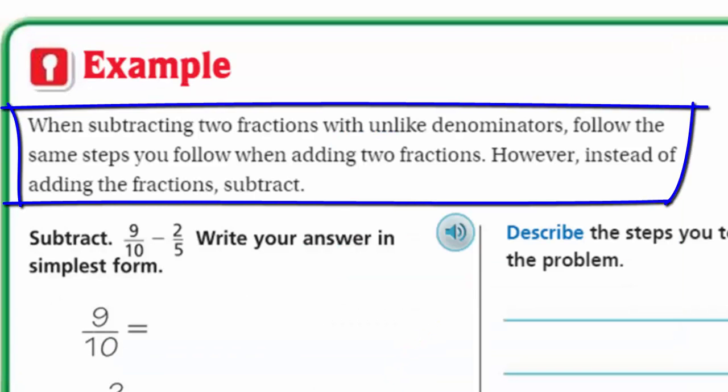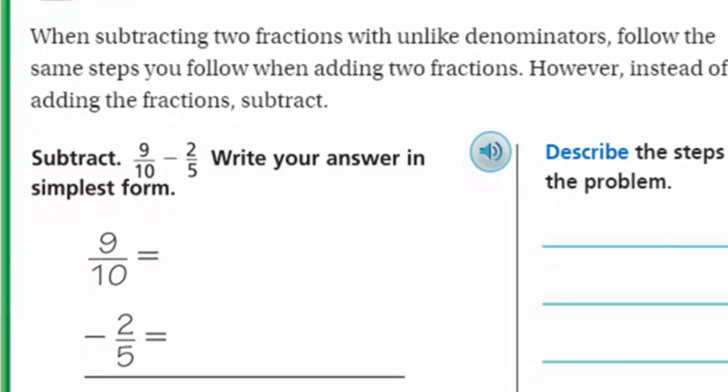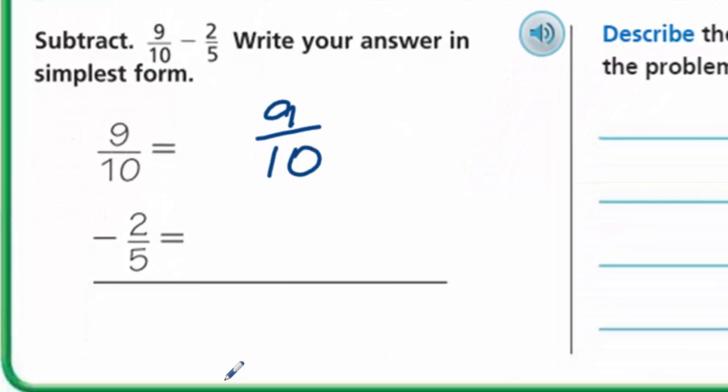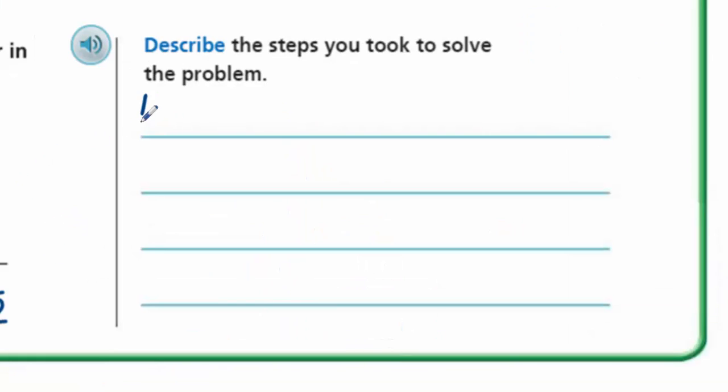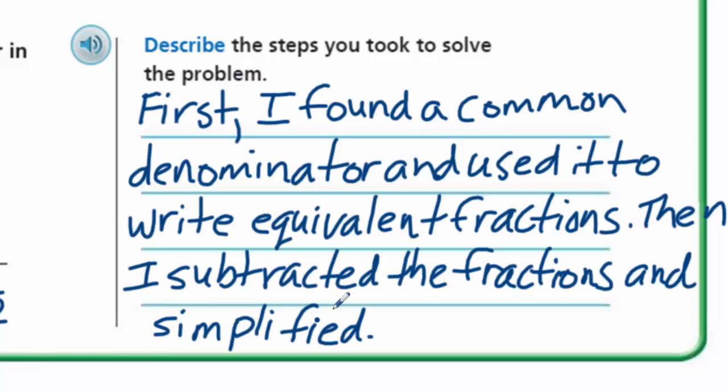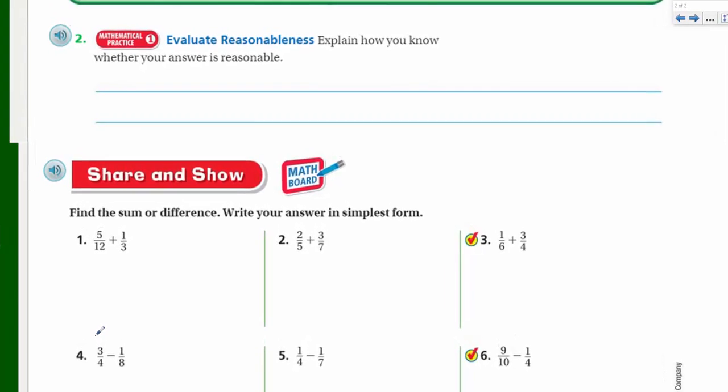Example. When subtracting two fractions with unlike denominators, follow the same steps you follow when adding two fractions. However, instead of adding the fractions, subtract. So, here's the subtract. Nine-tenths minus two-fifths. Write your answer in simplest form. Let's just keep the nine-tenths as nine-tenths. We'll put our two-fifths here. Let's multiply that. We'd have to multiply it by two over two.